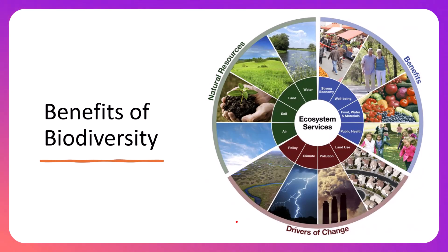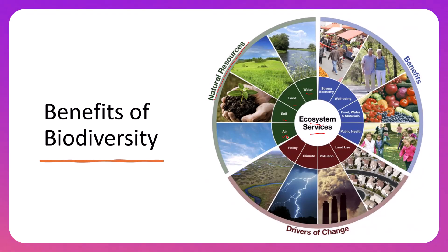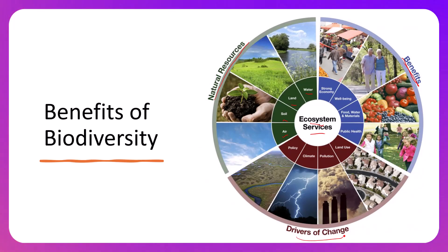In this graphic, all of these are what we call ecosystem services — the services that ecosystems provide us. It's broken into three categories: natural resources, which are physical resources from the Earth such as water, land, soil, and air (part of the biosphere, hydrosphere, atmosphere, and geosphere); benefits that these ecosystem services provide people; and drivers of change, which are things that can drive change within an ecosystem, impacting both natural resources and benefits to humans either positively or negatively.